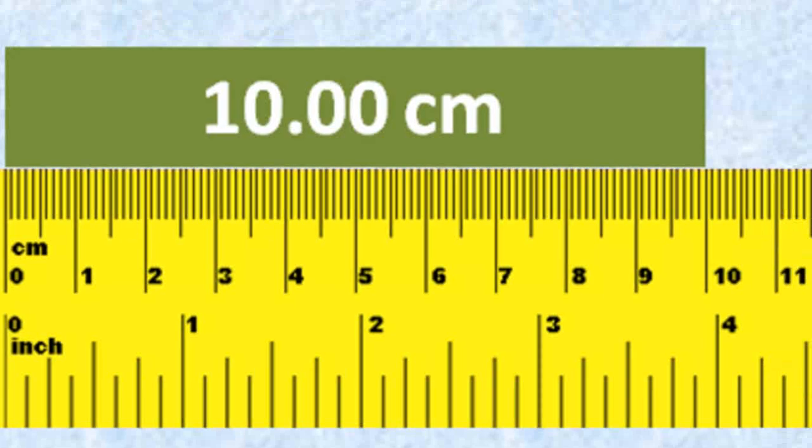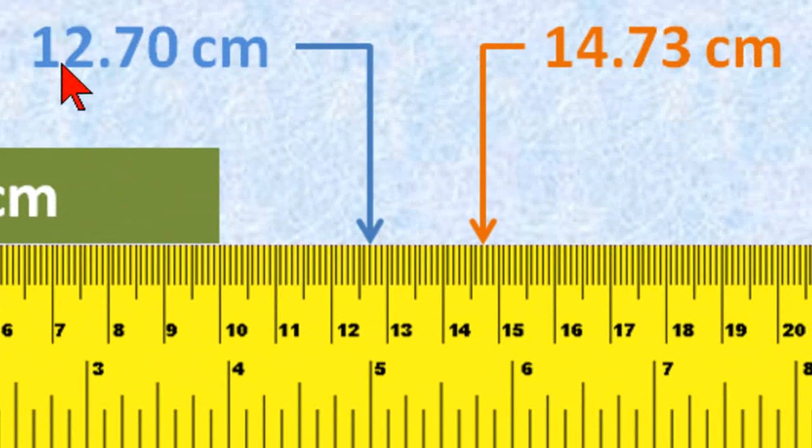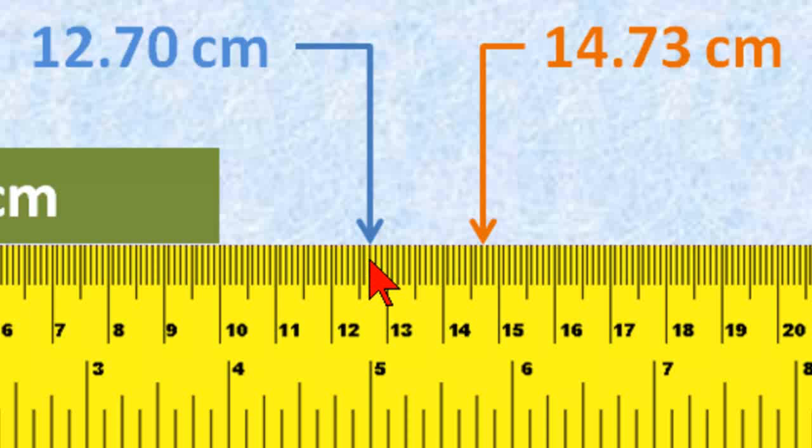In addition here, we have a couple more examples. This is 12.70 centimeters in blue, where the blue arrow is right here. And in orange is 14.73 centimeters, where we measure 14.7, and in between the 0.7 and the 0.8, we estimate three hundredths of a centimeter, which is exactly right here.